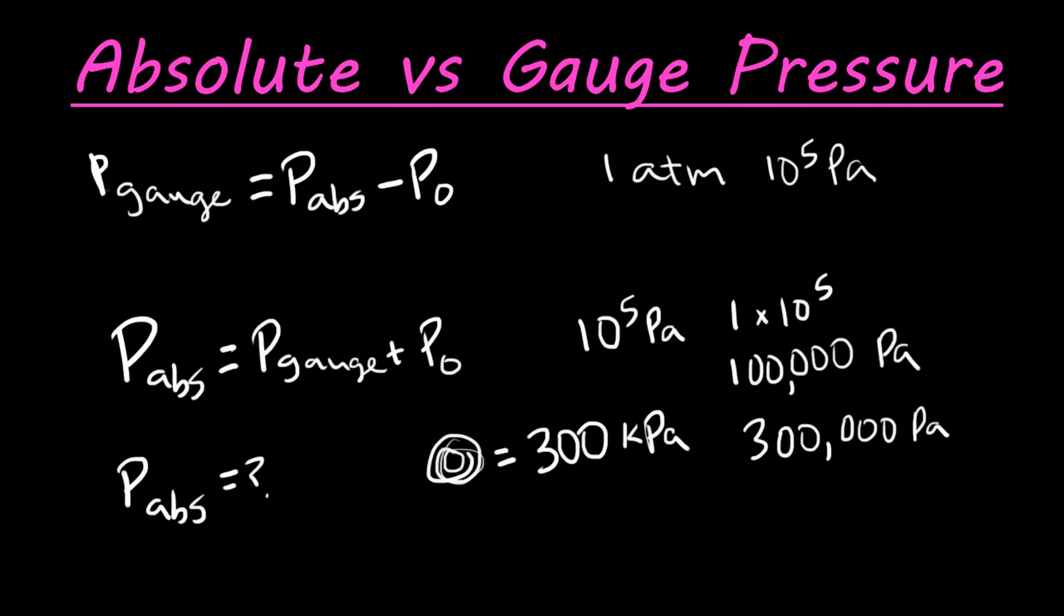So if we want to find our absolute pressure of this tire, we just take the pressure of the gauge, which is the tire, 300,000 pascals, plus our atmosphere of pressure, so about 100,000 pascals. Add this together, and we get 400,000 pascals. So our absolute pressure for this system would be 400,000 pascals by adding the tire pressure plus the atmosphere of pressure.